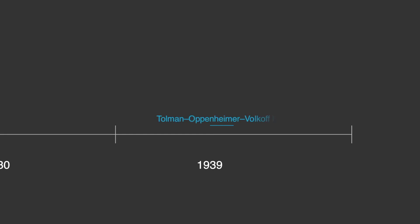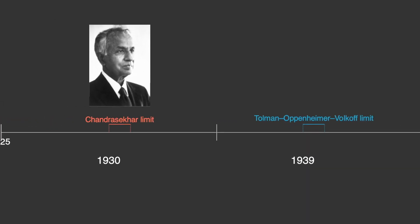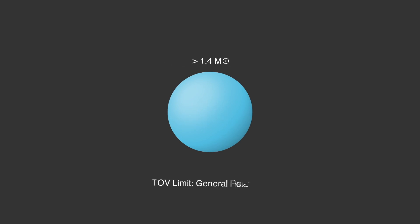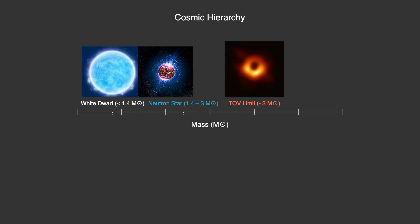The TOV limit complemented another crucial breakthrough just a few years earlier, the Chandrasekhar limit. In the 1930s, Subrahmanyan Chandrasekhar showed that white dwarfs, remnants of lower mass stars, could only support themselves against gravitational collapse up to 1.4 solar masses. Unlike the TOV limit, which stems from general relativity, Chandrasekhar's limit was derived using quantum mechanics and special relativity to account for relativistic electron degeneracy pressure. Together, the Chandrasekhar limit and the TOV limit revealed a cosmic hierarchy of stellar remnants. Stars below 1.4 solar masses end their lives as white dwarfs. Those between 1.4 and around 3 solar masses collapse into neutron stars, supported by neutron degeneracy pressure.